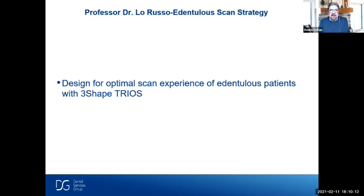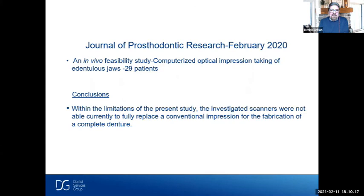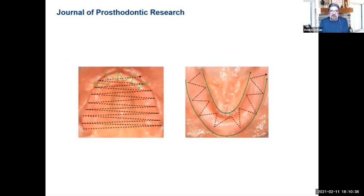A February 2020 in vivo feasibility study on computerized optical impression taking — intraoral scanning of edentulous jaws — involved 29 patients. Their conclusion was that within the limitations of the present study, the investigative scanners were not able to currently fully replace a conventional impression for fabrication of a complete denture. They used totally different scan directions from what Dr. LaRusso did, which could have been the issue. We're seeing more and more successful scans of fully edentulous cases, and hopefully within the next year or so we'll be there.